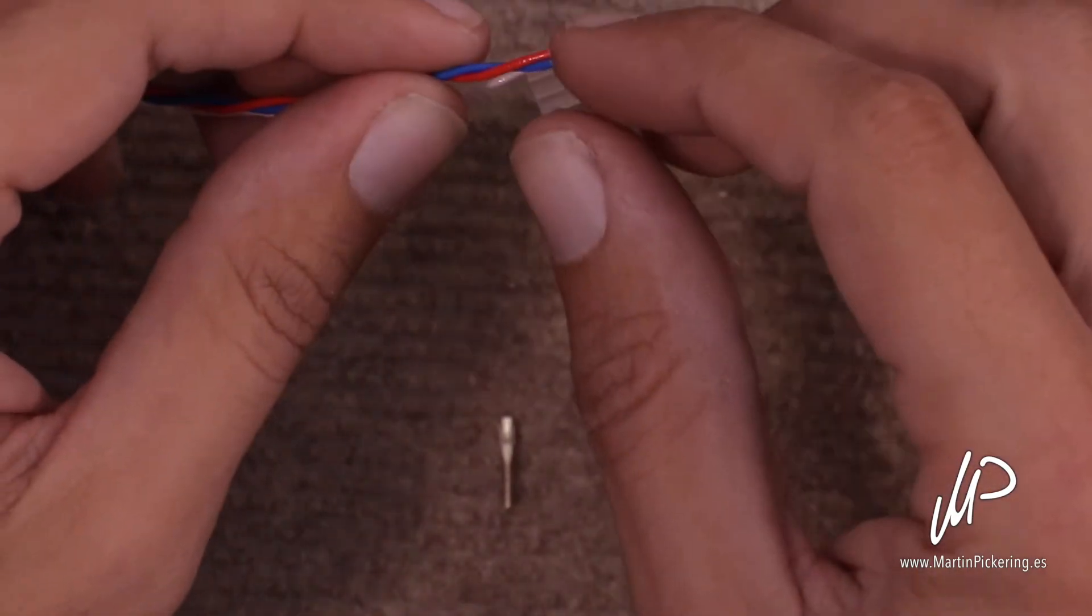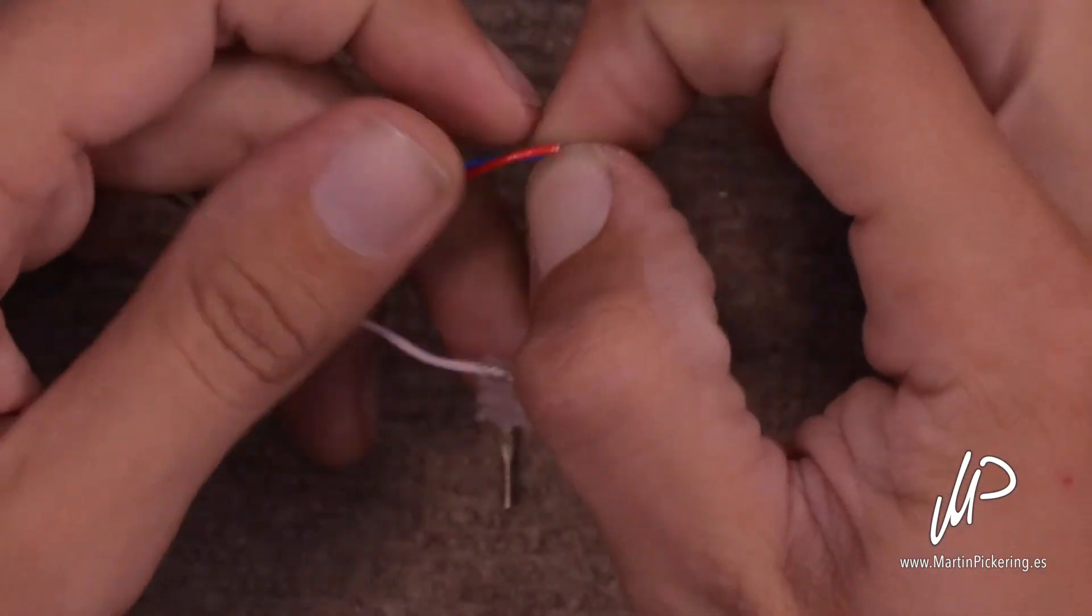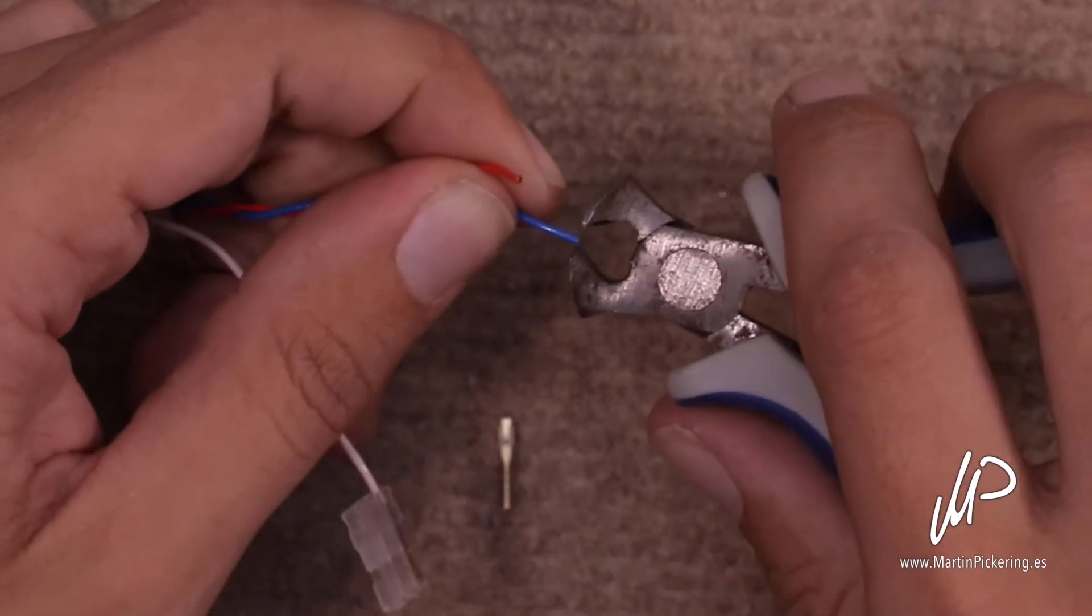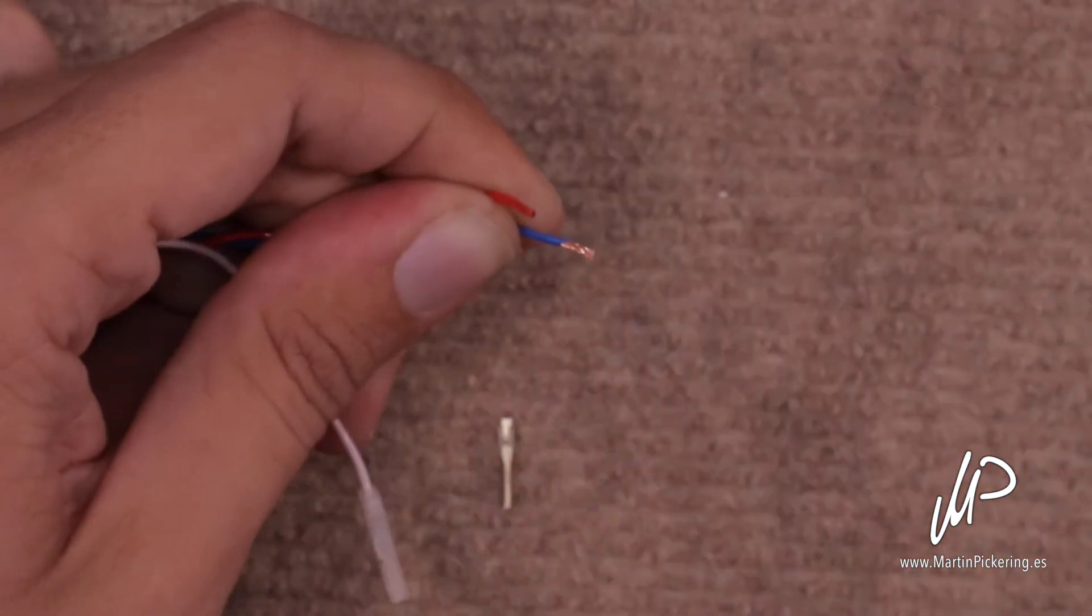First thing, obviously, you need to peel the wire itself, just removing the plastic.